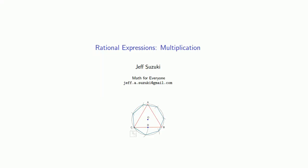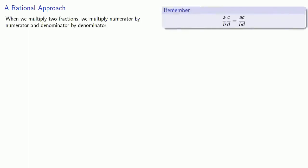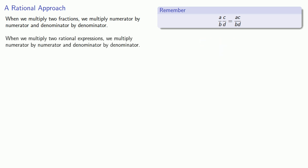What happens when you try to multiply two rational expressions? It's useful to keep in mind that rational expressions are essentially fractions. When we multiply two fractions, we multiply numerator by numerator and denominator by denominator — so a over b times c over d is ac over bd. We don't really change much when we multiply rational expressions; we do the same thing.